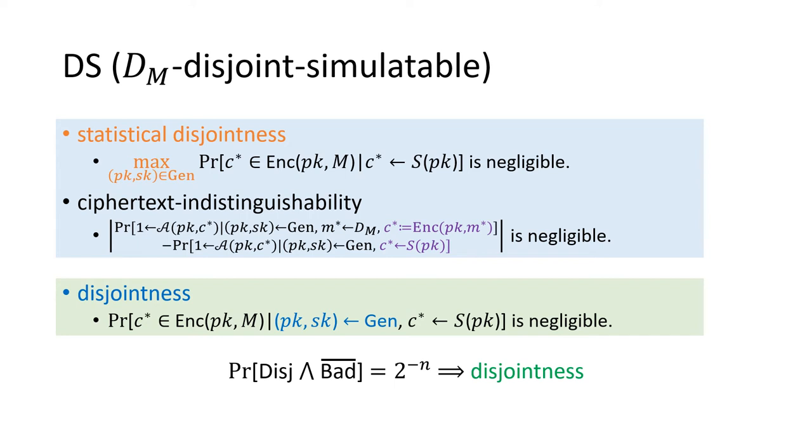In our proof, to cooperate with the bad event we defined before, we modify the first requirement to disjointness. Specifically, we remove the maximum and consider it in the average case.